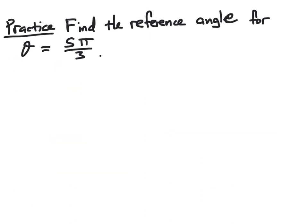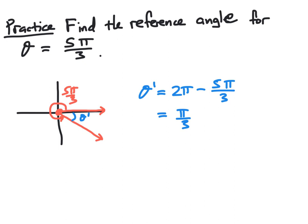For practice, try to find the reference angle for the angle theta equals 5 pi over 3 radians. Notice this is a fourth quadrant angle, and theta prime is the angle formed with the positive x-axis. To find the exact measure of theta prime, we can take a complete rotation of 2 pi radians and subtract off the large angle, 5 pi over 3, resulting in the smaller angle theta prime. When doing the subtraction, we obtain theta prime equals pi over 3, which is the reference angle for 5 pi over 3. Notice that this angle is one whose sine and cosine values we know.